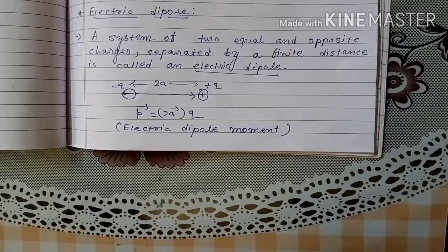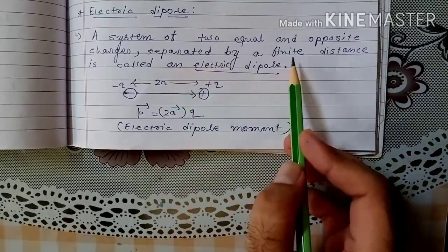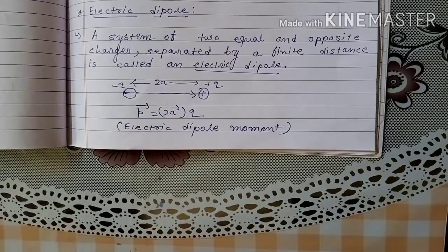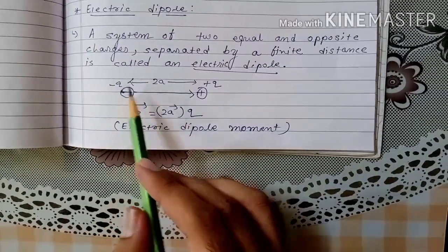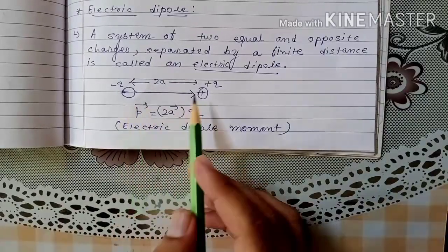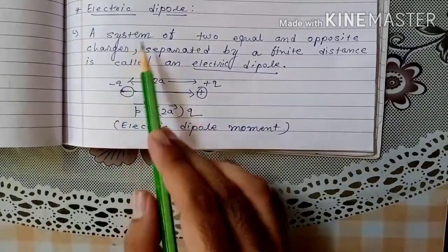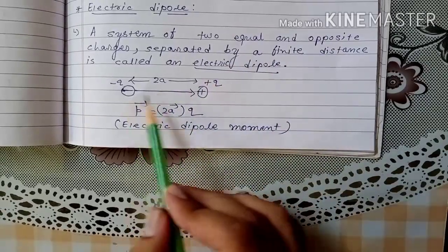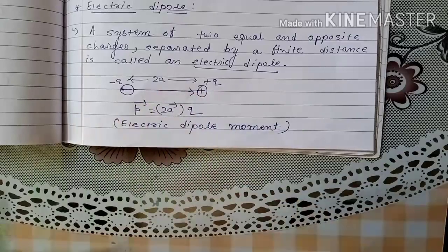A system of two equal and opposite charges separated by a finite distance is called an Electric Dipole. Equal in the sense they should have equal magnitude. So I am considering minus Q charge and plus Q charge — their magnitudes are same but they have opposite polarity. They are separated by some finite distance, that is 2a. So this system is called Electric Dipole.